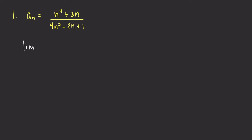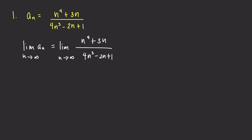Let's compute the limit of a sub n as n goes to infinity, which is the limit as n goes to infinity of n raised to 4 plus 3n over 4n cubed minus 2n plus 1. This is similar to computing limits of rational functions. Our technique is to divide the numerator and denominator by the highest degree term in the denominator — excluding the coefficient — which is n cubed.